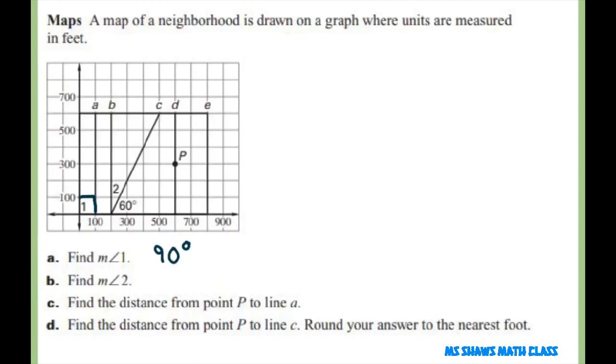And also the measure of angle 2. Basically this measure is 60 degrees. This is a right angle. So if this is 60, this has to be 30 degrees because they are complementary angles.